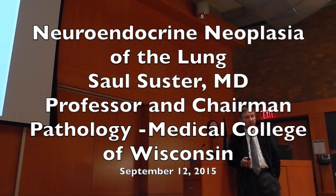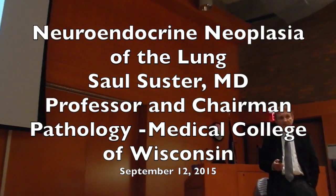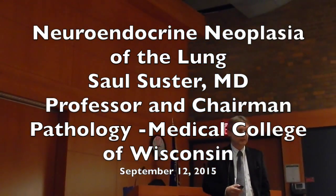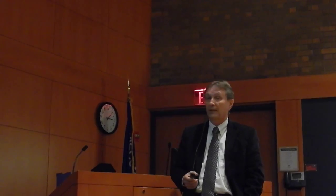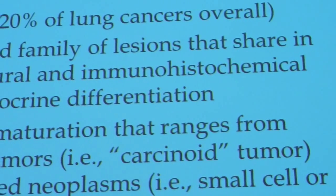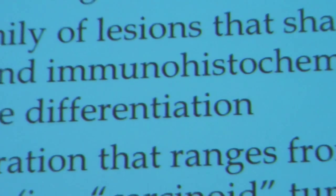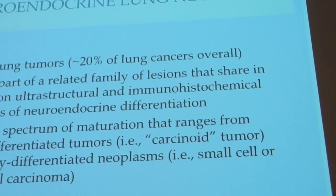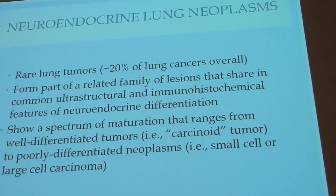This is a somewhat controversial topic because there's a lot of confusion currently regarding this family of tumors. These are very rare. About 20% of all tumors are thought to belong to the neuroendocrine family, and these constitute a family of related lesions that share in common features either at the histological, structural, or immunochemical level of neuroendocrine differentiation.